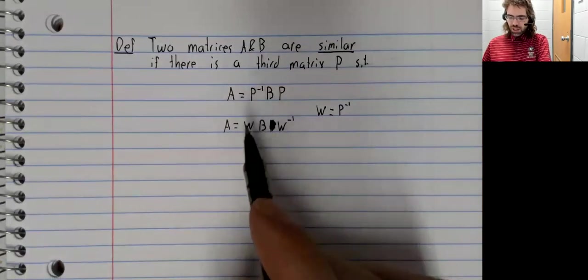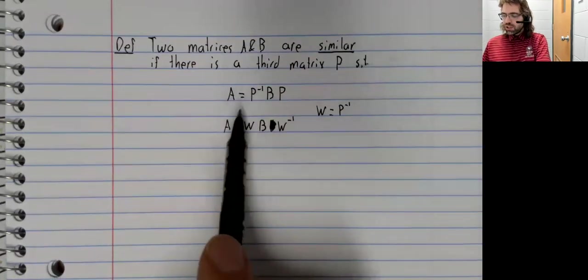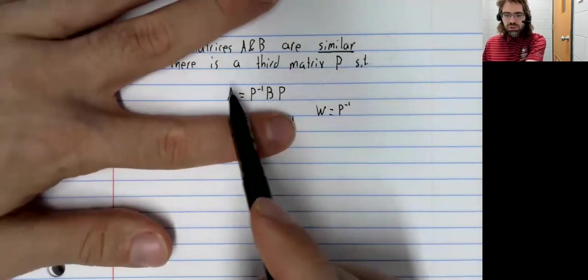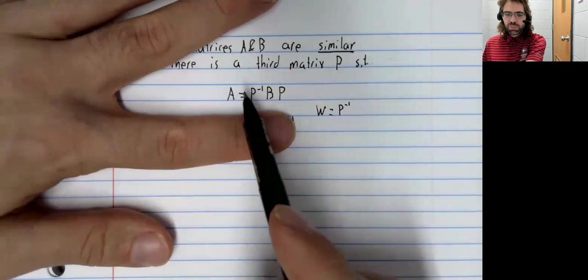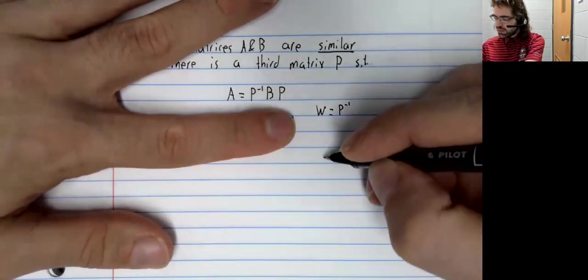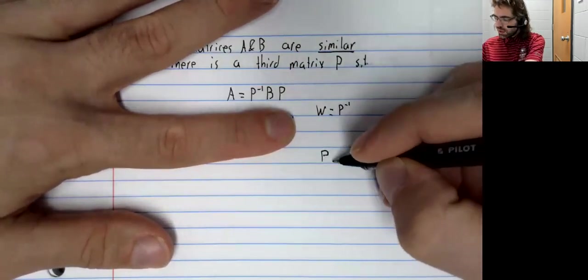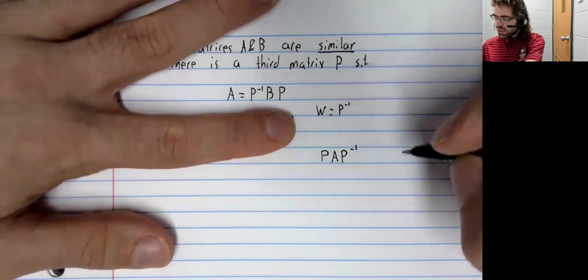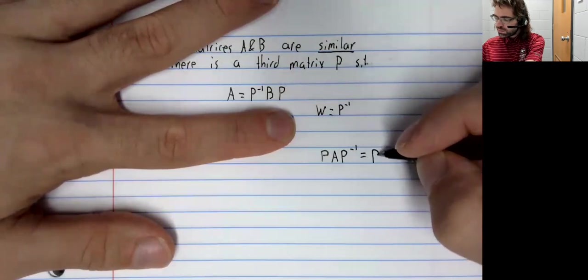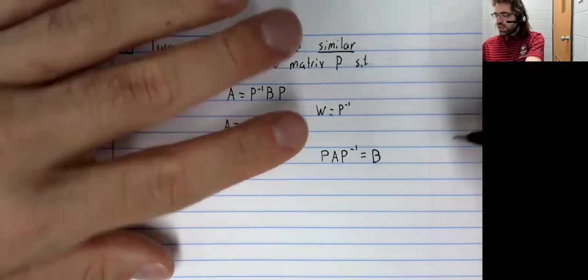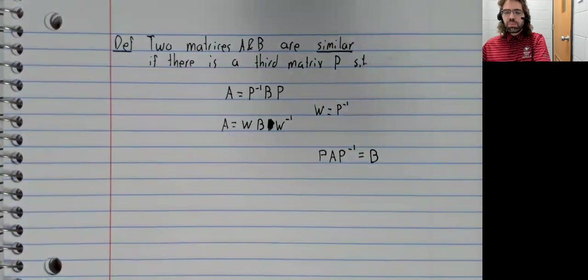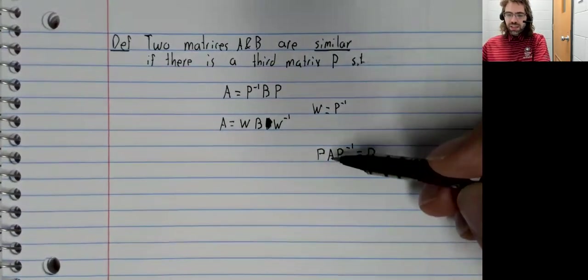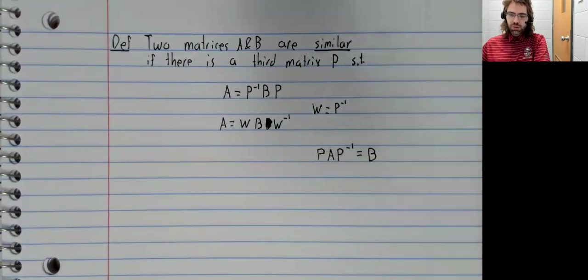Now, putting this to some use, we could take this equation and multiply both sides by P and both sides by P inverse. And now it's B that equals A times some other stuff.